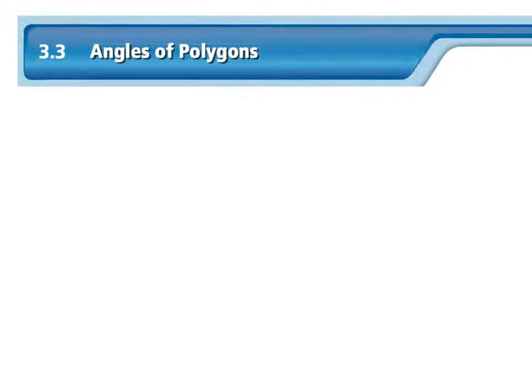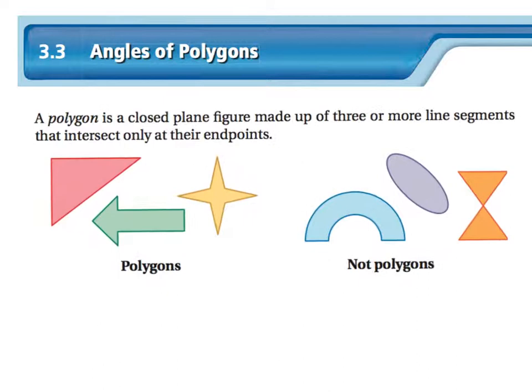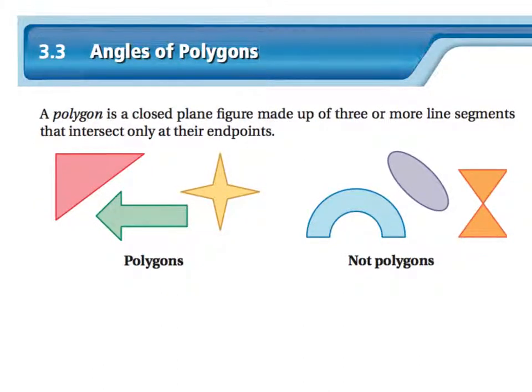First of all, let's review what a polygon is. I know some of you are like, Mr. Humphreys, we know that. Well, you probably do, but we got to just make sure you do and know the correct and precise definition. A polygon is a closed plane figure made up of three or more line segments that intersect only at their endpoints.